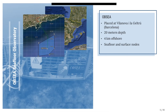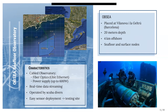Since it is a cabled observatory, the green line in this picture represents the cable going to the ground station. We have fiber optic communications and a power supply, which allows us to have real-time data streaming, which is not common in this type of observatory. It's quite shallow and operated by scuba divers, which is much cheaper and easier than using robots, so we achieve really easy sensor deployment—this is why we are a test site.